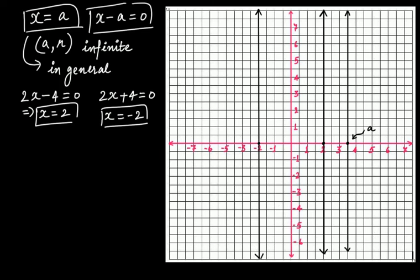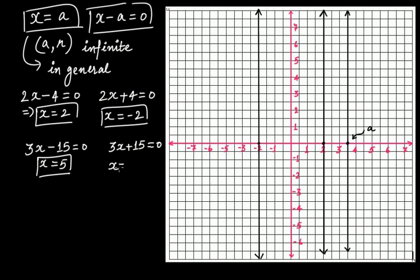Let's take a few more examples. If your equation is 3x − 15 = 0, then x = 5. If your equation is 3x + 15 = 0, then x = −5. So x = 5 means your line will pass through the point 5 on the x-axis, and x = −5 means your line will pass through the point −5 on the x-axis.